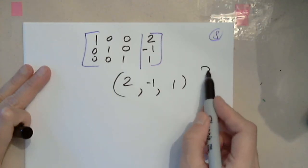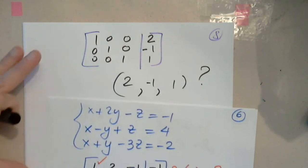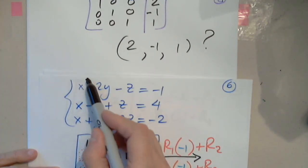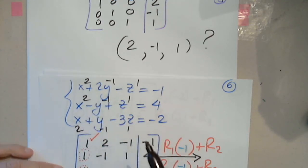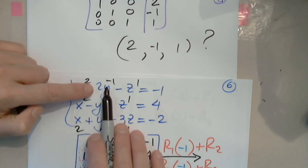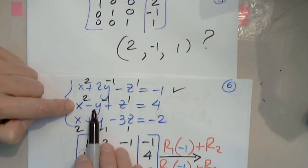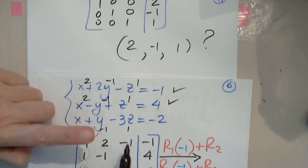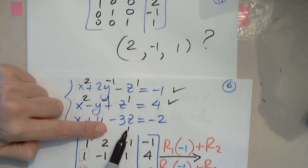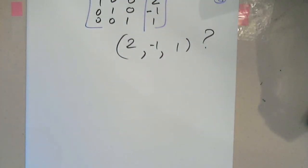So: 2, negative 1, 1. I have no clue — don't trust anything, just go back to the original system. 2, negative 1, 1; 2, negative 1, 1; 2, negative 1, 1. Positive 2 and minus 2 will be 0. Negative 1 equals negative 1. 2, but positive 1 is 3, plus 1 is 4. 2 minus 1 is 1. Minus 3 is negative 2. Only now I can say yes — and it's the only solution. I checked.